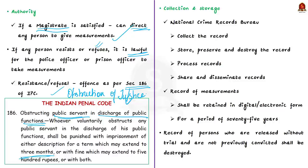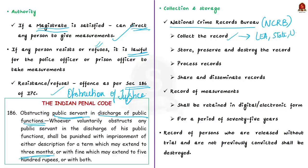So far we saw the purposes of the bill, what measurements should be taken, who will take them, and who has the authority to order that. Now let us see what will happen once the measurements are taken. As per the bill, the measurements will be under the administration of the National Crime Records Bureau, which has the authority to collect, store, preserve, share, disseminate, destruct, and dispose the records. It will collect records from state governments, union administrations, or any law enforcement agencies, and store and preserve them at the national level.